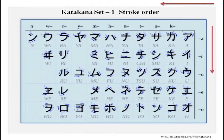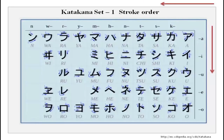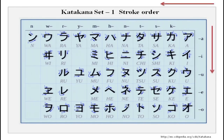You can see how cursive and round hiragana is, and then katakana is extremely masculine and very angular. The katakana syllables are the same: a, i, u, e, o; ka, ki, ku, ke, ko; sa, shi, su, se, so; ta, chi, tsu, te, to; na, ni, nu, ne, no; ha, hi, fu, he, ho; ma, mi, mu, me, mo; ya, yu, and yo.